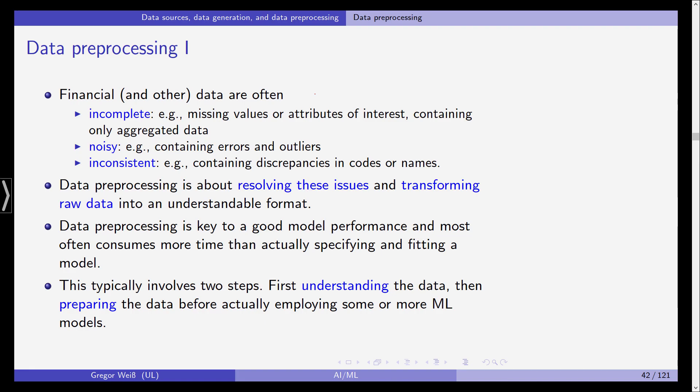Financial and other data nowadays are often quite incomplete. For example, you have missing values, you have missing attributes for some data points. Sometimes we have granular data, sometimes we have aggregated data. Depending on what you want to achieve with your data analysis, you sometimes need to aggregate the data or disentangle aggregated data back to the granular data they were created from.